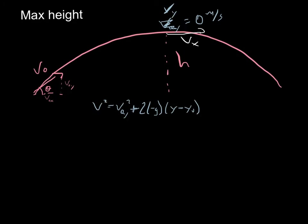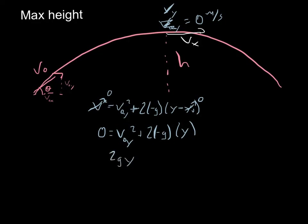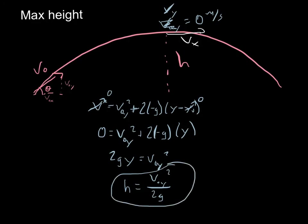So our equation becomes: 0 = v₀y² + 2(−g)(y − 0), where y₀ = 0. Rearranging: 2gy = v₀y², so the maximum height is H = v₀y²/(2g). This shortcut helps us avoid confusion about the x-velocity still being present at that point. Anytime you're asked about maximum height, use this equation: maximum height equals v₀y squared over 2g.